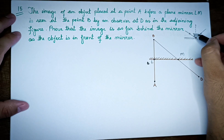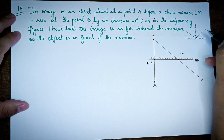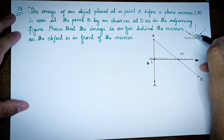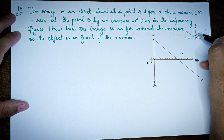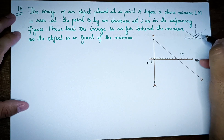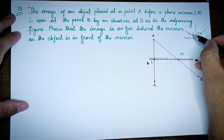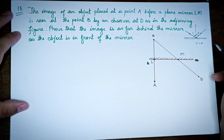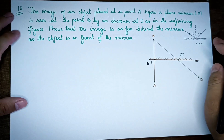The angle of incidence is small letter i, and the angle of reflection is small letter r. The angle of incidence equals the angle of reflection — this is the law of reflection.